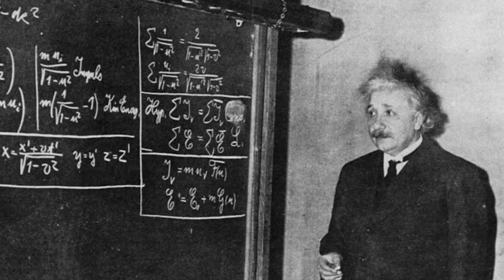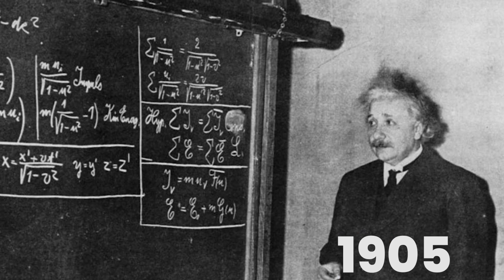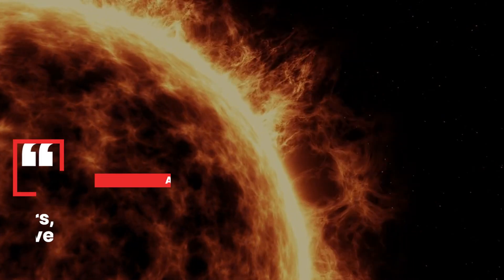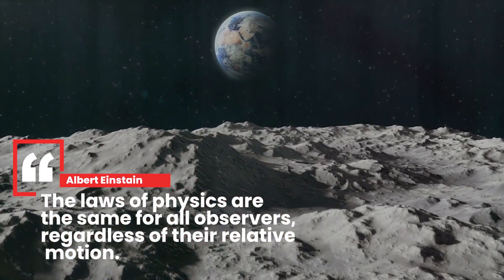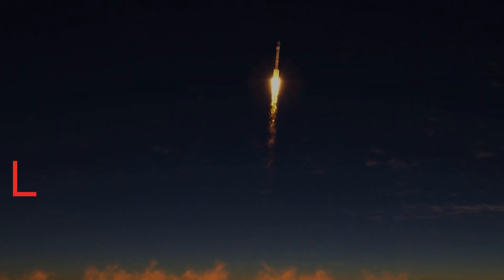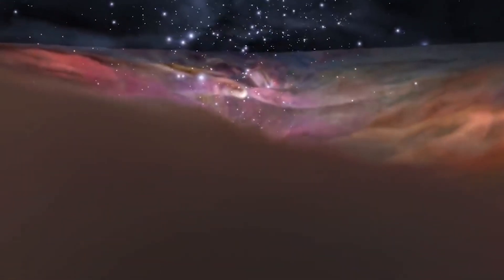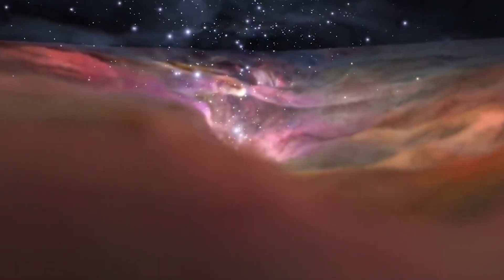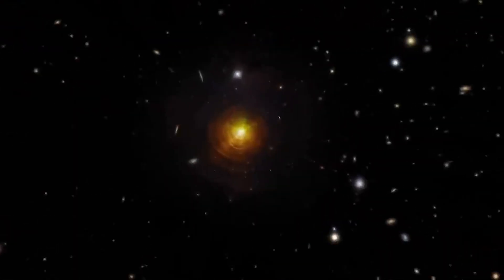Special relativity, proposed by Albert Einstein in 1905, states that the laws of physics are the same for all observers, regardless of their relative motion. One of the most famous consequences of this theory is that nothing can travel faster than the speed of light in a vacuum.